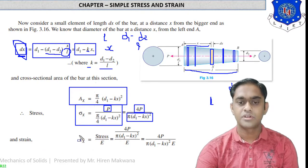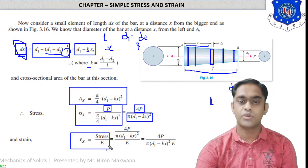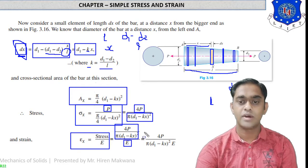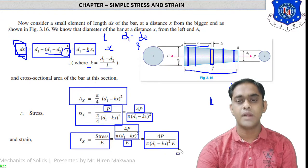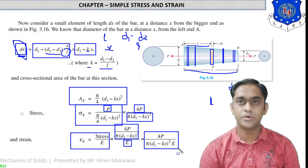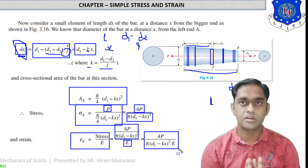Strain equals stress upon Young's modulus E. Replacing stress with the earlier term, strain equals 4P upon π(D1 minus kx)² divided by E, giving strain as 4P upon π·E·(D1 minus kx)². This is the strain for the elementary circular strip.